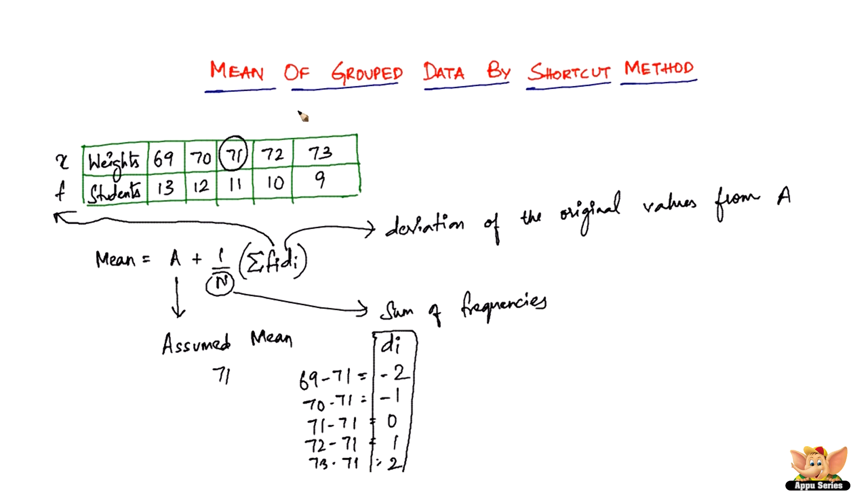The major difference between the direct method and the shortcut method is you assume a mean (capital A), then find the deviation of the original values from the assumed mean, and substitute those values in the formula: mean equals A plus 1 by N times summation FI DI.